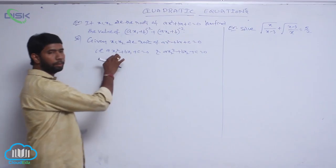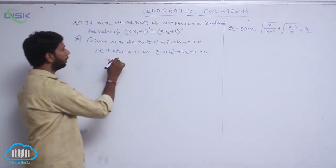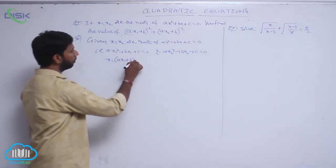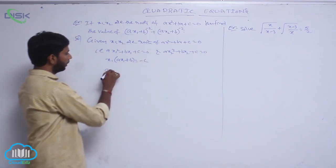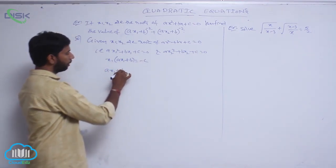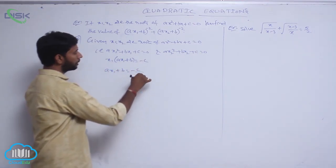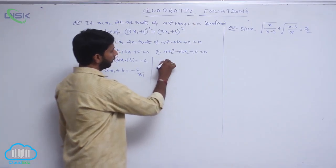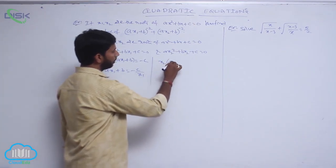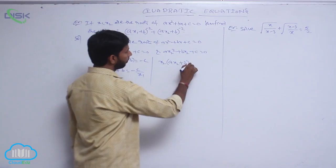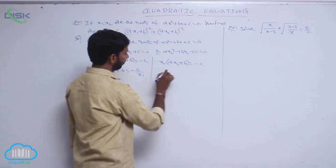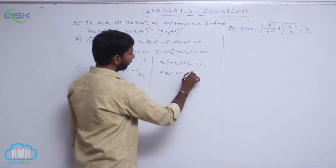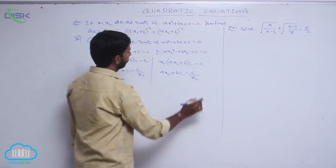In the first equation, x₁ is common in the first two terms: x₁(ax₁ + b) = −c, that is ax₁ + b = −c/x₁. Similarly, x₂ is common in the second equation: ax₂ + b = −c/x₂.